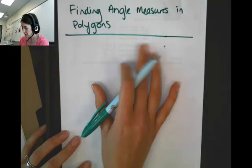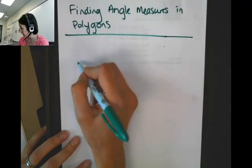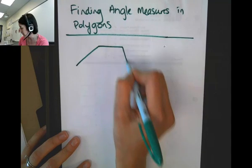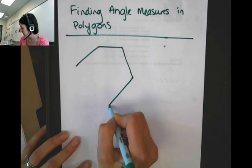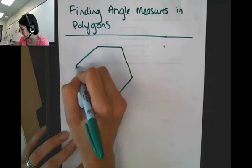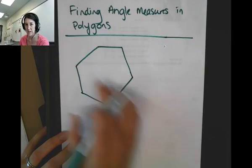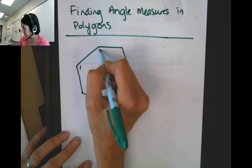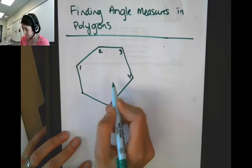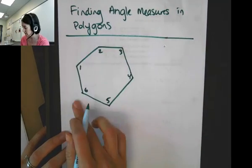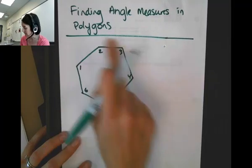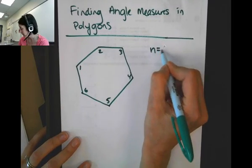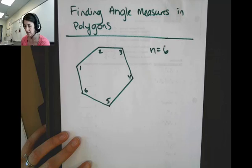So I'm going to draw any old polygon. I think I'm going to end up here with a hexagon, a six-sided one, but no particular shape or anything. It's not a regular hexagon. Angles one, two, three, four, five, six angles, six sides. The number of sides I have in this is six.